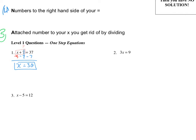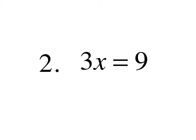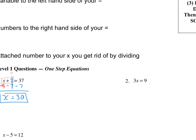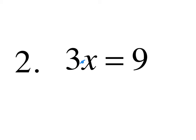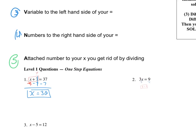Now I have 3x equals 9. I don't see addition or subtraction, but I do see multiplication, because my 3 is attached to my x — that's a sign of multiplication. We said the way to get rid of multiplication is to do division. So to get rid of multiply by 3, we're going to divide by 3 on both sides. My 3s cancel, so I get x equals 3, because 9 divided by 3 is 3.